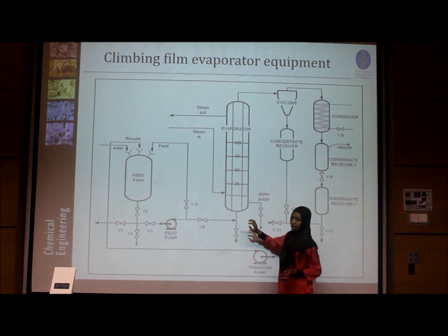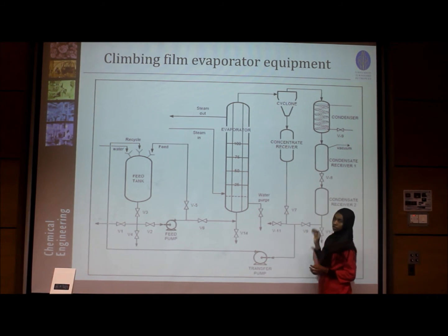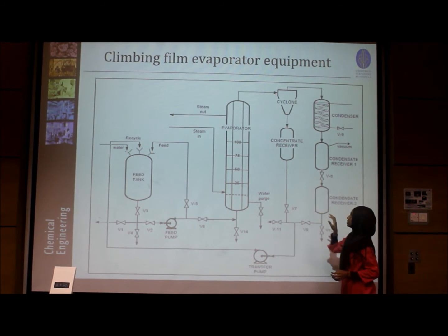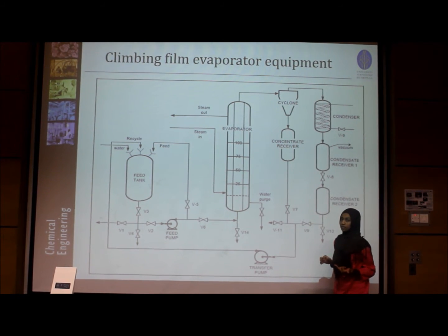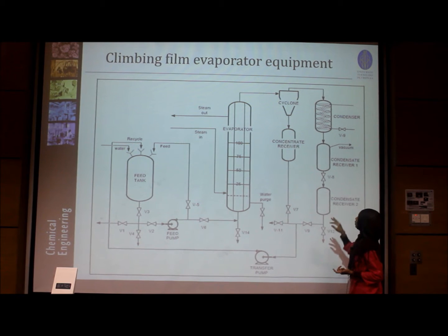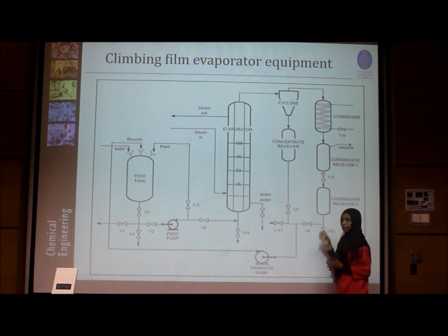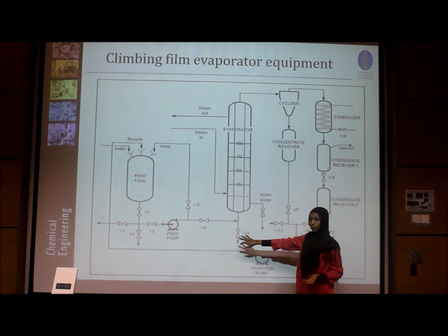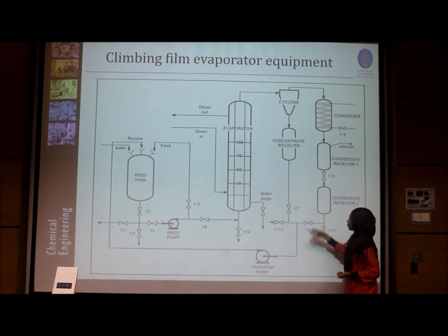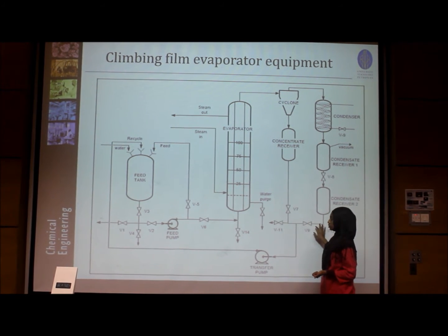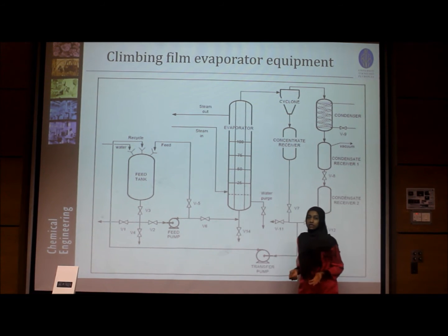With this high velocity, the mixture goes to the top of the evaporator and is discharged into the separator, where it is separated into vapor and concentrated liquid. The vapor goes to the condenser where it is condensed and can be recycled for energy efficiency. The product can be taken out or recycled back into the feed tank for more concentration.